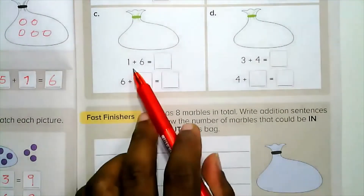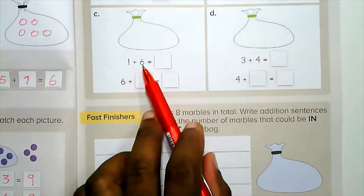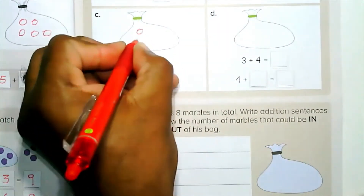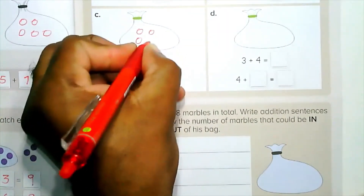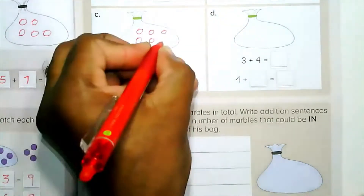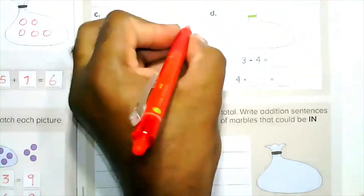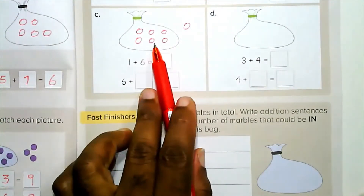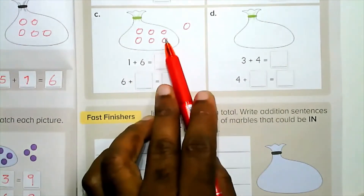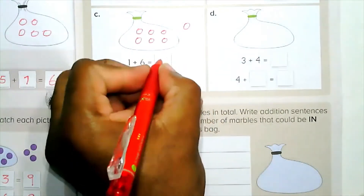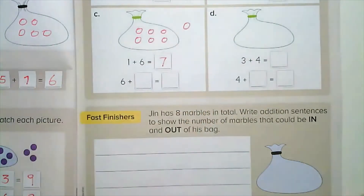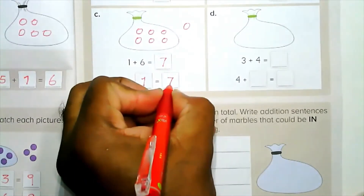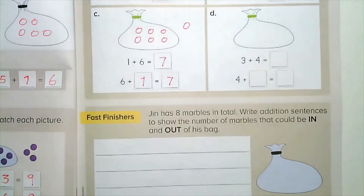Part C: we have six and one. Draw six circles in the back and one outside. Using the greater number and count on: six, seven. The answer is seven. Six plus one makes seven.